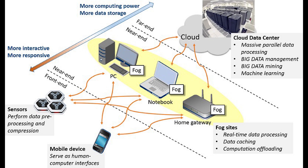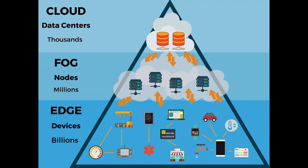Fog computing is a decentralized computing infrastructure that distributes data processing, storage, and applications between the data source and the cloud. It brings the benefits and power of the cloud closer to the point where the data is created and acted upon. This is often done to improve efficiency and sometimes for security and compliance reasons. While edge computing refers to bringing computing closer to data sources, fog computing is a standard that defines its operation and application in diverse scenarios.